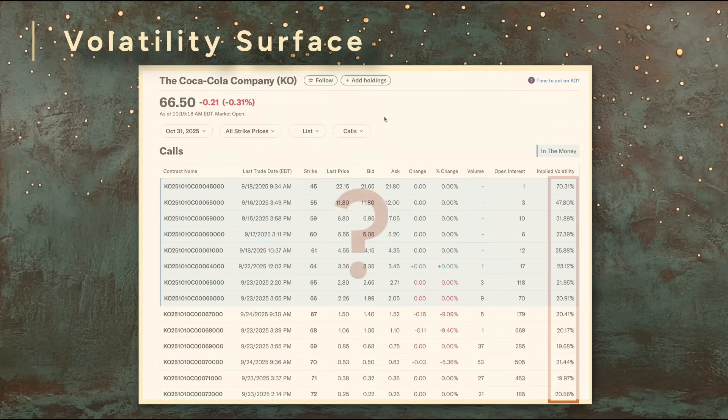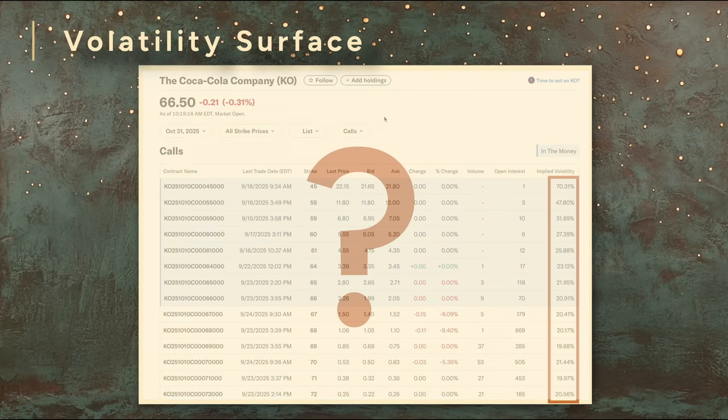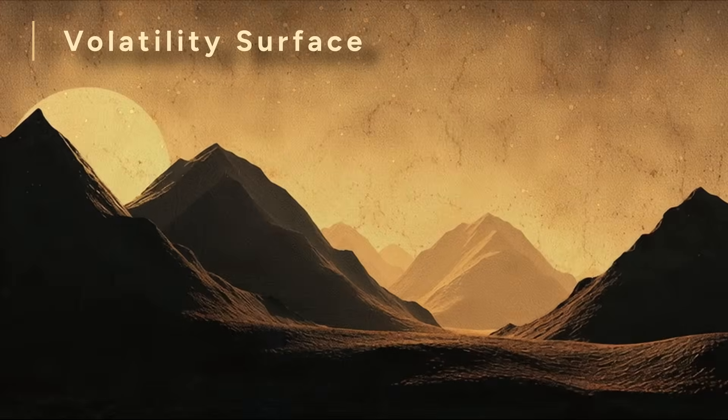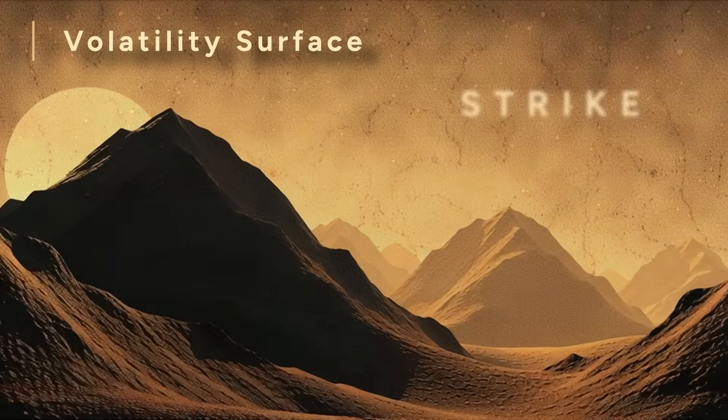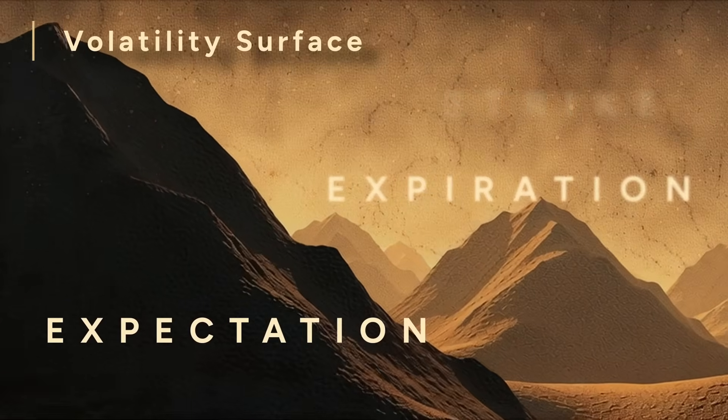Is this surprising? Why isn't there just one implied volatility for the stock? Turns out the market's perception of risk changes depending on the scenario. Different strikes, different expirations, different expectations.